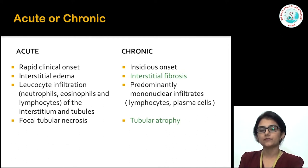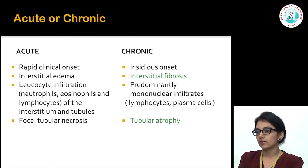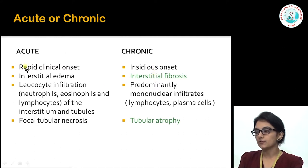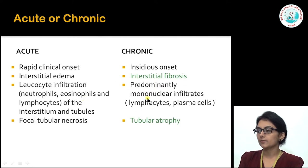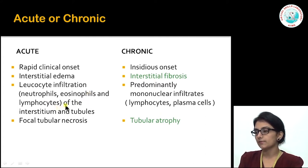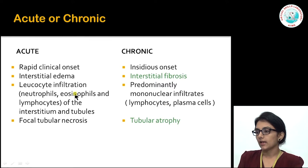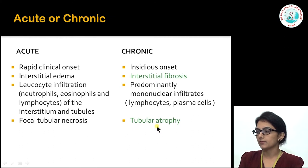Now let's look at TIN as acute or chronic. Clinically, acute TIN has a rapid onset whereas chronic is more insidious. On tissue examination, edema suggests acute while fibrosis suggests chronic. The nature of the inflammatory infiltrate also helps — neutrophils and eosinophils are expected in acute involvement, whereas chronic shows more mononuclear cells such as lymphocytes and plasma cells. Acute TIN shows focal tubular necrosis versus tubular atrophy in chronic TIN.